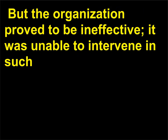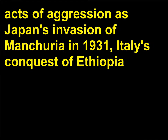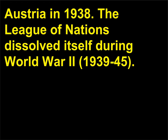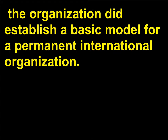But the organization proved to be ineffective; it was unable to intervene in such acts of aggression as Japan's invasion of Manchuria in 1931, Italy's conquest of Ethiopia during 1935–36, occupation of Albania in 1939, and Germany's takeover of Austria in 1938. The League of Nations dissolved itself during World War II, 1939–45. Though unsuccessful, the organization did establish a basic model for a permanent international organization.